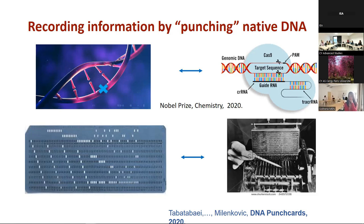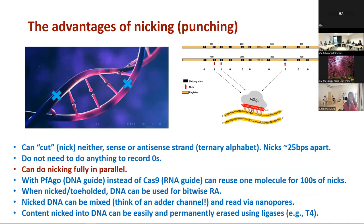The system we use for punching is the CRISPR-Cas9 complex — the immune system of bacteria. If something invades the bacteria, the immune system cuts and shreds the genetic material of the invader. We used a variant that can cut only one strand — we don't want to cut both, because if you cut both at the same location you split your DNA into two parts. This is what we call DNA punch cards. Rather than Cas9, we used an enzyme that cuts only one strand.